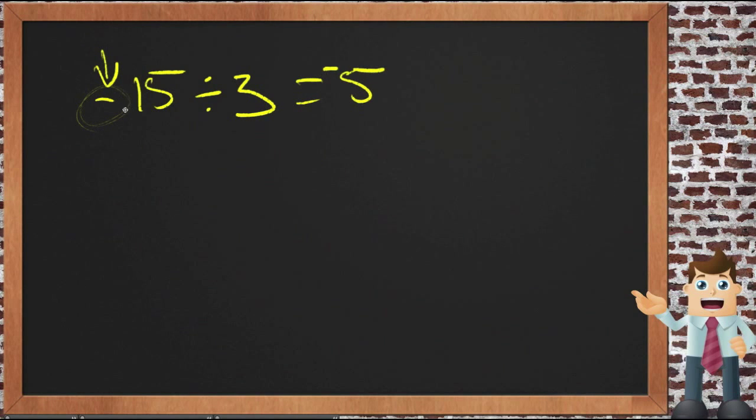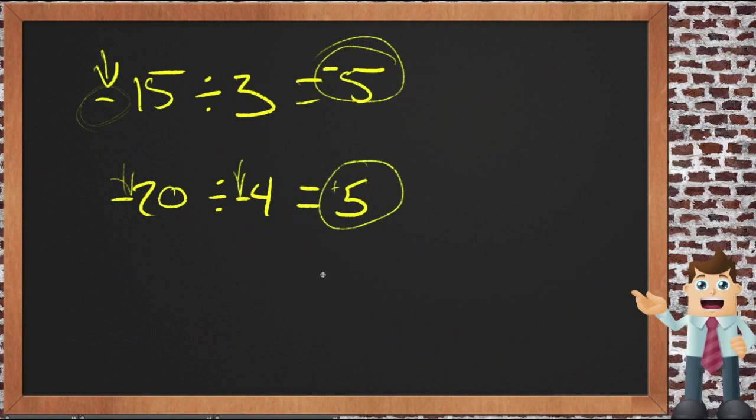Then go back and count the negatives. If there's an odd number your answer is negative, if there's an even number your answer is positive. For example, -20 divided by -4 is 5 again, but now we have two negative signs - that's an even number - so the answer is positive.